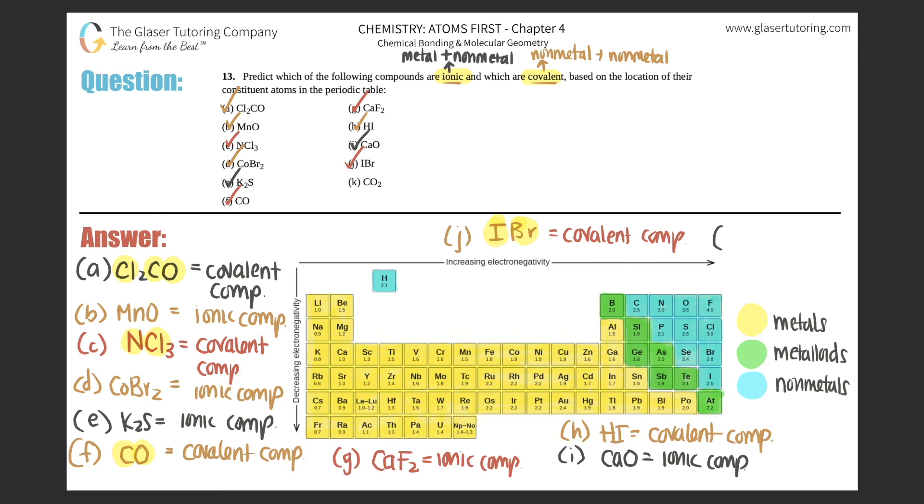And then last but not least, we have K. Carbon dioxide, CO2. Carbon and oxygen. Carbon's over here. Oxygen's over here. They're both non-metals. So this would be covalent. So this would be a covalent compound. And that's it.